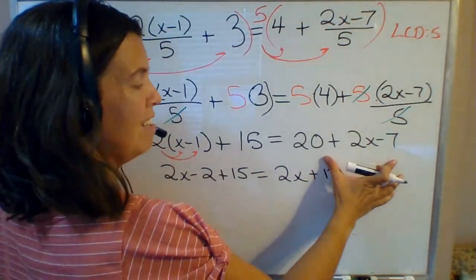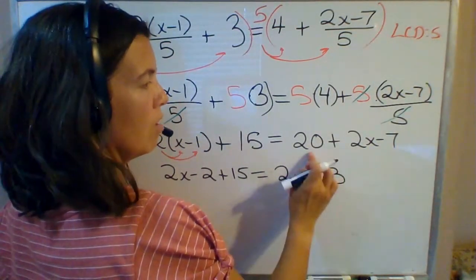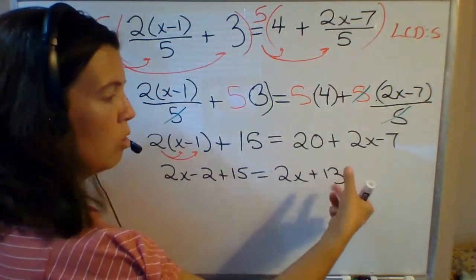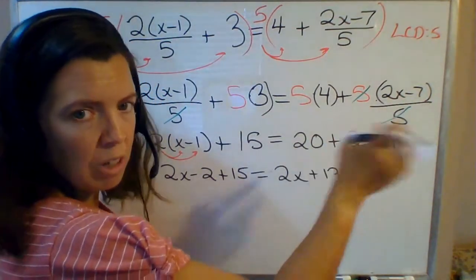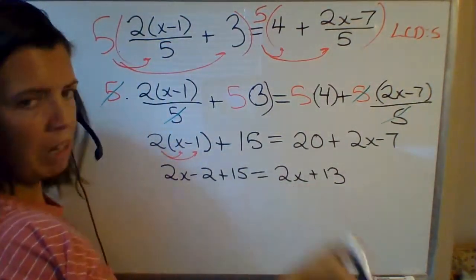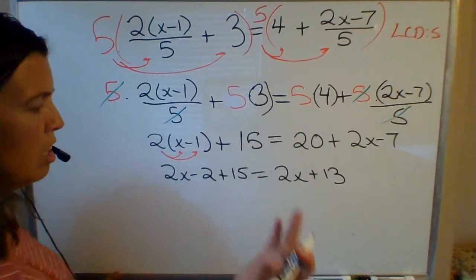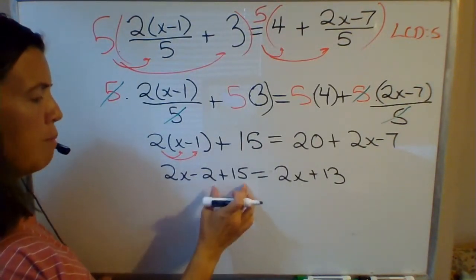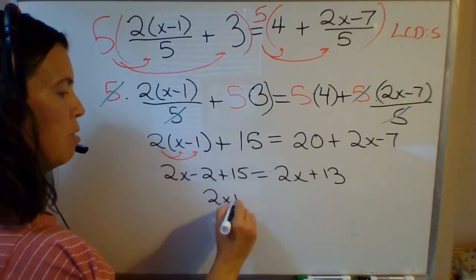By the way, if you wrote the 13 first - if you just went straight across 20 minus 7 is 13 plus 2x - well for addition the order doesn't matter. 2 plus 1 is the same as 1 plus 2. So either way if you wrote 13 plus 2x or I wrote 2x plus 13 we're in agreement. And I look at this side when I combine like terms - this is also 2x plus 13.